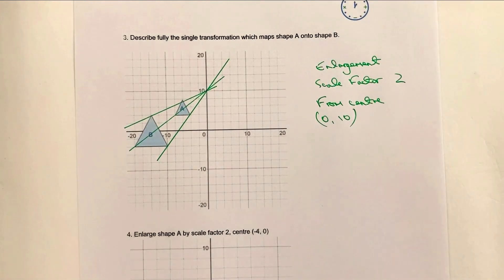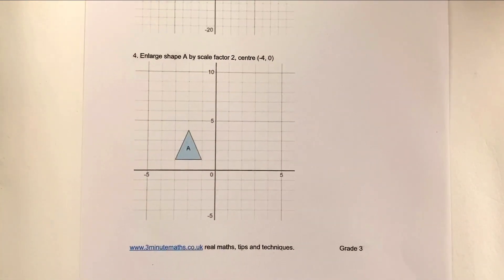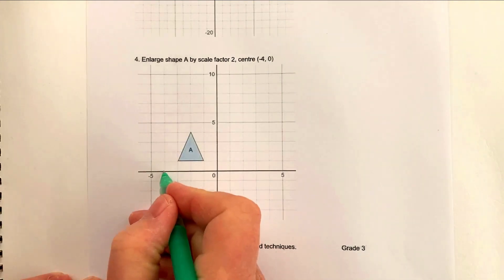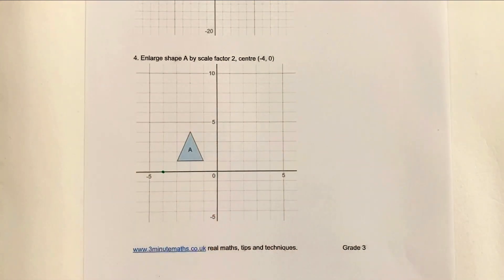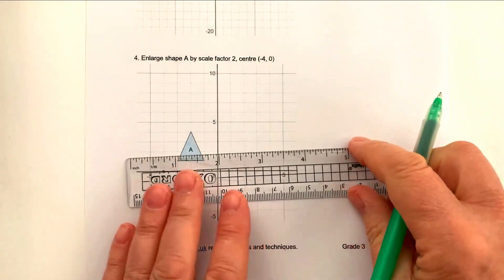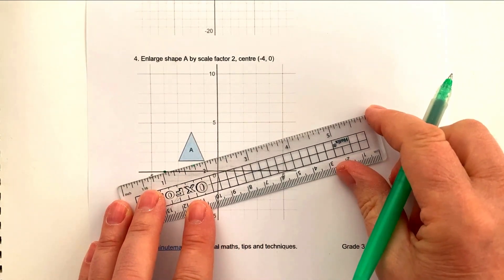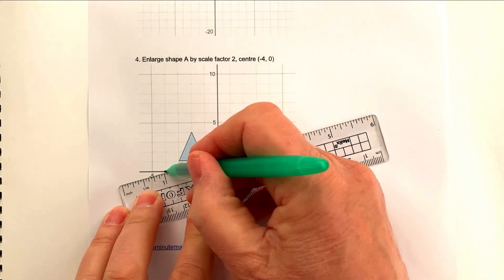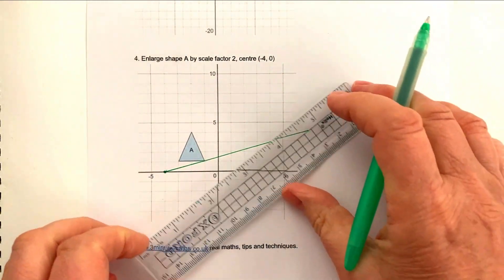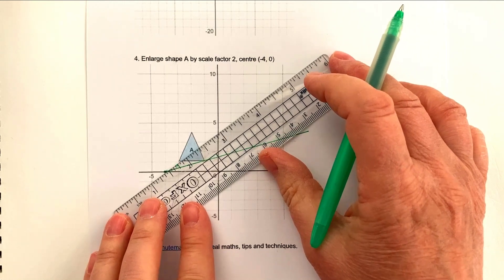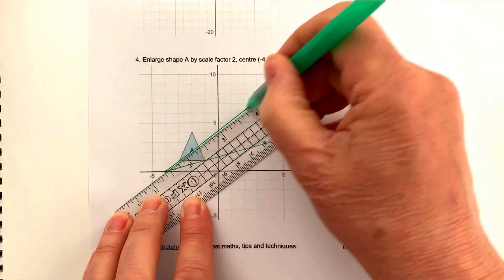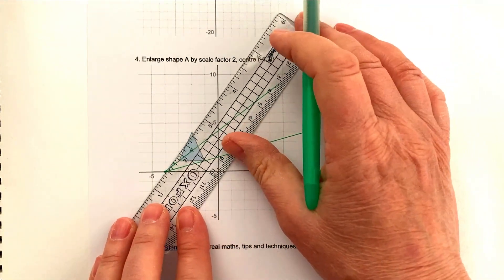For the final question: enlarge shape A by a scale factor of two using the center (-4, 0). First, let's locate the center — (-4, 0) is here. Now I'll draw the lines of enlargement from the center through each vertex of shape A. It's a little tricky to draw neatly, but a sharp pencil helps. These lines of enlargement serve as a guideline to confirm that your new points are positioned correctly.